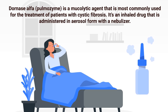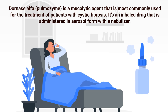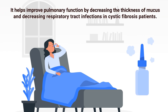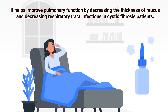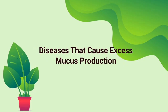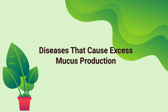Next is dornase alpha, also known as Pulmozyme. It is a mucolytic agent most commonly used for the treatment of patients with cystic fibrosis. It is an inhaled drug administered in aerosol form with a nebulizer. It helps improve pulmonary function by decreasing the thickness of mucus and decreasing respiratory tract infections in cystic fibrosis patients.